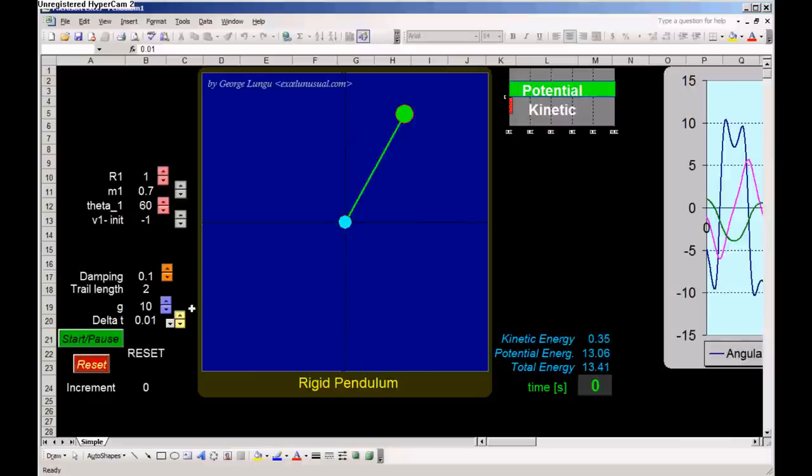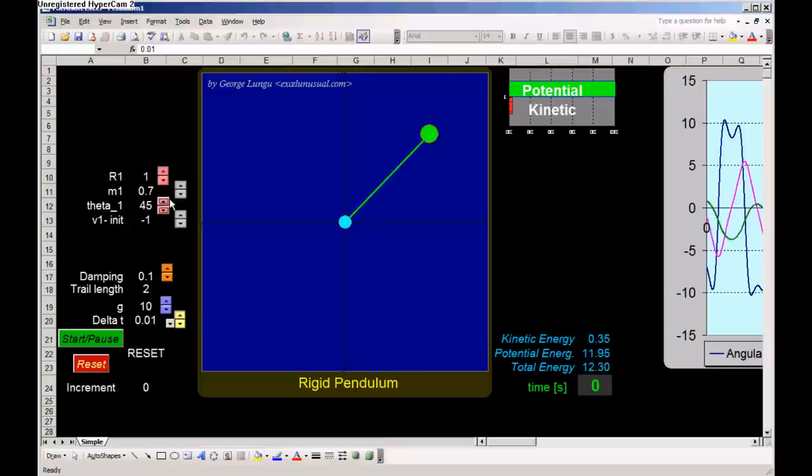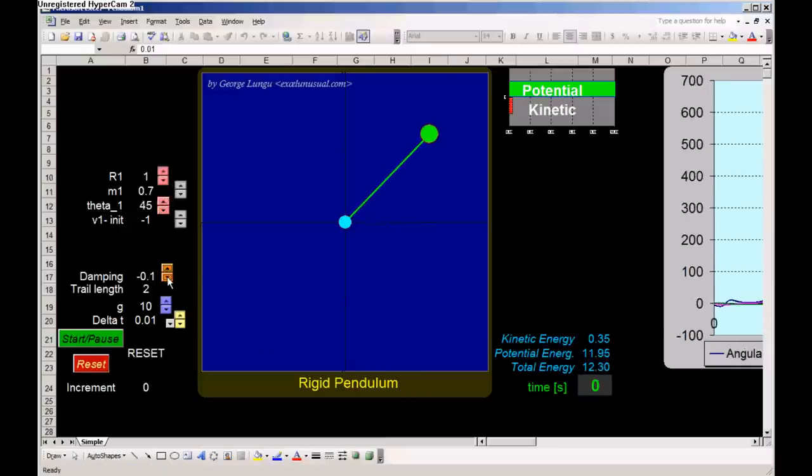Let's reset it. Let's reduce the angle to maybe 45 degrees. The damping, make it negative. Let's say minus 0.1.